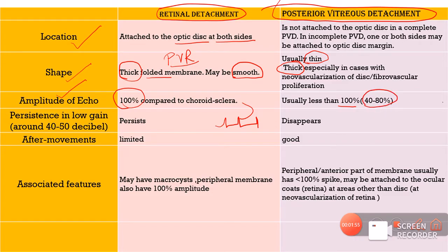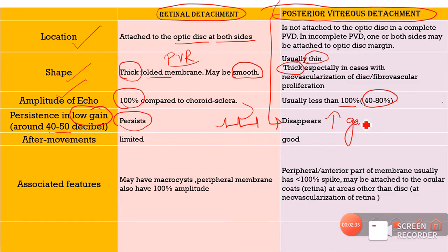As I discussed in my basic video on B-scans about the gain setting, in case of a posterior vitreous detachment, we have to increase the gain in order to make out the PVD. When we put the setting to a low gain of about 40 to 50 decibels — decreasing the brightness of the B-scan — an RD, which has more reflectivity, will still persist on the B-scan. However, a posterior vitreous detachment will actually disappear. So in order to see a PVD, we need to increase the gain; whenever the gain is decreased, the PVD will disappear.